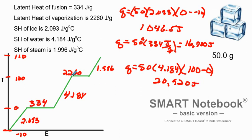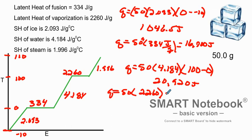Now the temperature levels off because we are boiling the water and must overcome those intermolecular forces. The q for that is 50 multiplied by the latent heat of vaporization, which is 2260. That equals 113,000 joules.